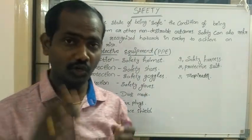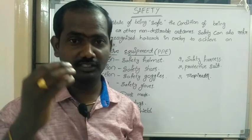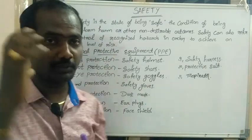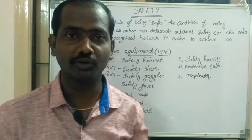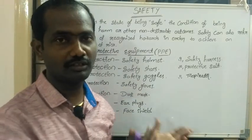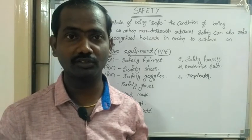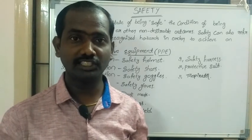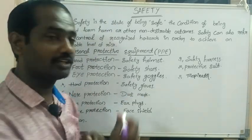Eye protection — safety goggles. Safety goggles protect from liquids and hazards. There are different types: normal glasses, electrical insulated glasses, and welding glasses. For hand protection, gloves are used — including rubber gloves and acid-resistant gloves, depending on the task.